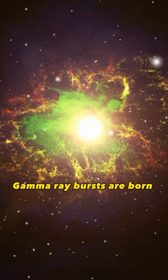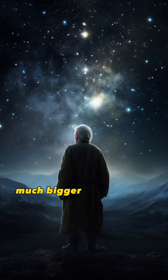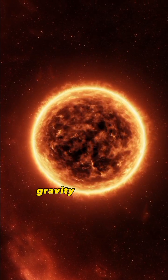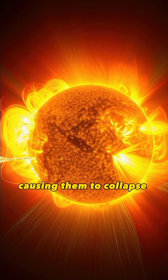Gamma ray bursts are born from dying stars, much bigger than our sun. When these stars run out of fuel, gravity takes over, causing them to collapse inwards.